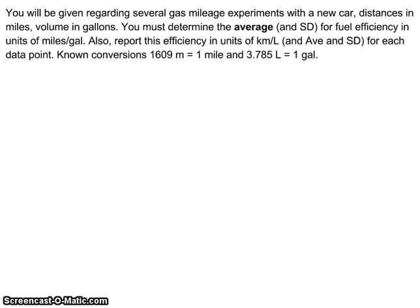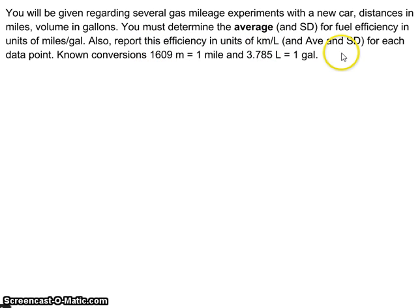We're faced with experimental information. We're told something about an experiment and given some data. We're asked to calculate fuel efficiency for cars, given some distances in miles and volume in gallons. We need to determine the average and standard deviation for fuel efficiency in units of miles per gallon, and also report this efficiency in units of kilometers per liter. We're given the conversion for meters into miles and liters into gallons.